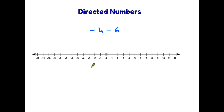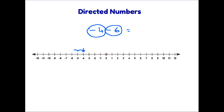Let's have a look at another couple of examples. Here we have minus four minus six. This time the first number in the sum is a minus four, so that is where we are going to start. The next number also has a minus in front — it's minus six. So because it is minus we go one, two, three, four, five, six in this direction and we land on minus ten. So minus four minus six is minus ten.